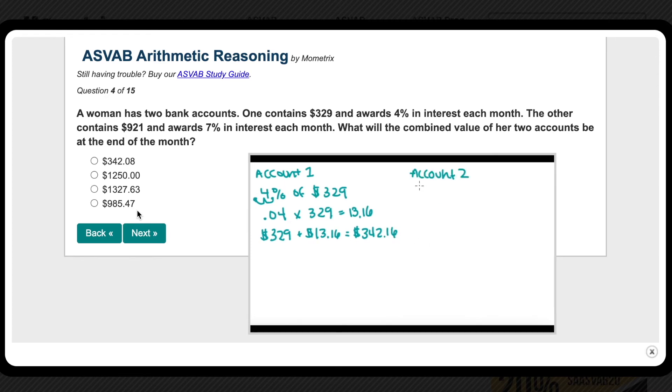Now let's look at her second account. We can do the same thing. It has $921 originally, and the bank is going to give her 7% interest each month. So what's 7% of $921? We can write it as 0.07 times $921, which is $64.47. So that means the bank is going to give her $64.47 at the end of the month. To figure out the total amount of money in her second account, let's take the original $921, and then add $64.47, which makes $985.47.